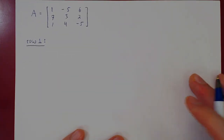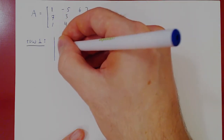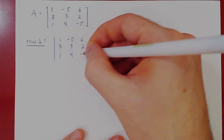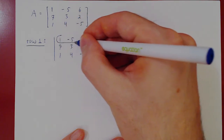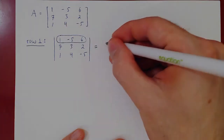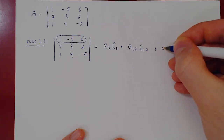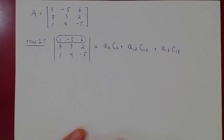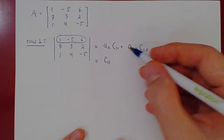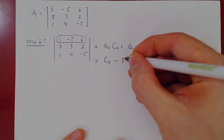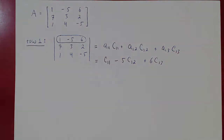The determinant of A — using vertical bar notation — expands along the first row as: A_11 times C_11, plus A_12 times C_12, plus A_13 times C_13. The entries of row 1 are 1, negative 5, and 6, so this becomes: 1 times C_11, plus negative 5 times C_12, plus 6 times C_13. All we're missing now are the three cofactors.